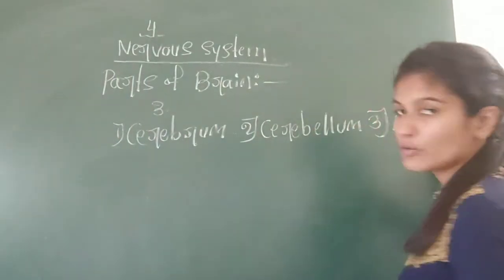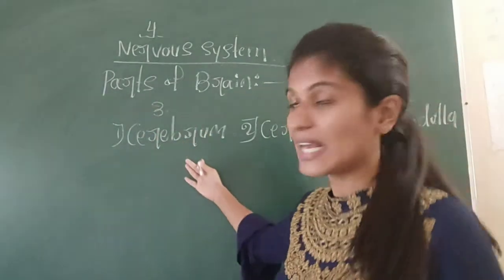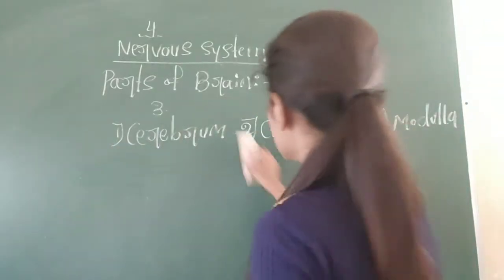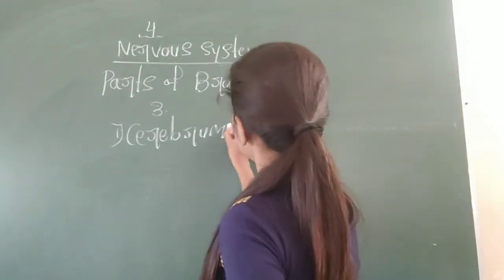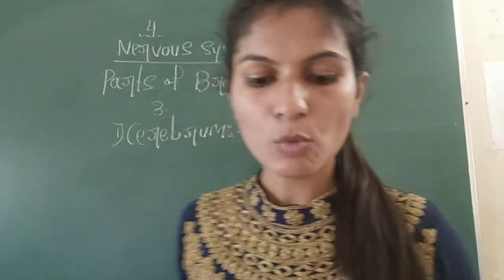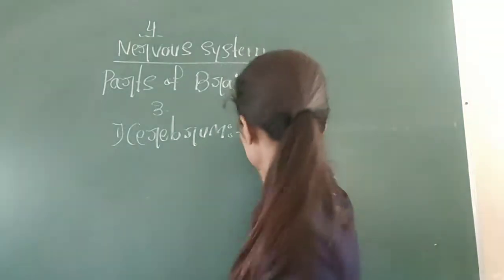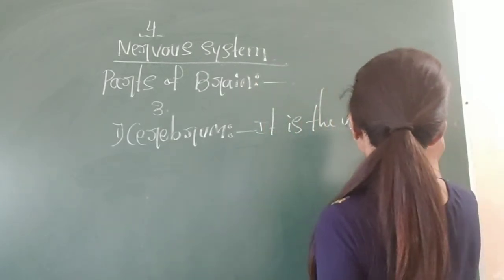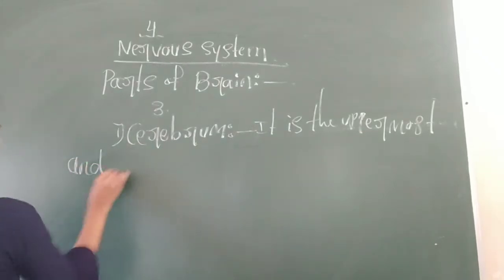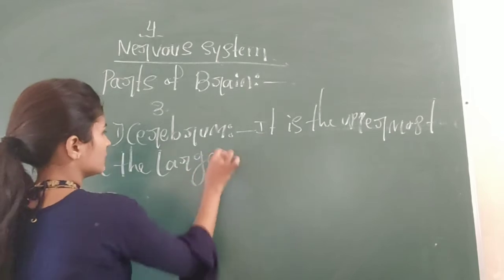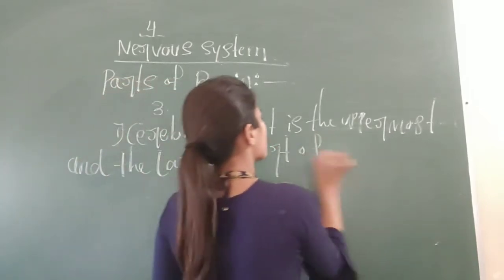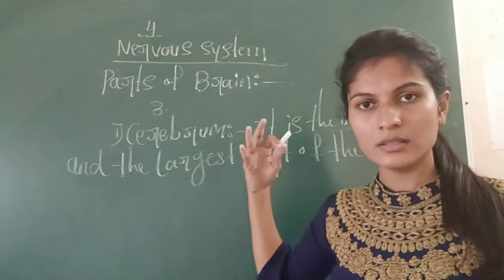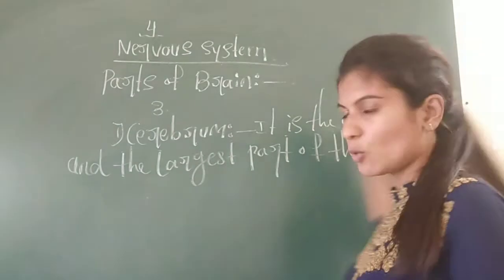Let's study each part one by one. The first one is cerebrum. What is cerebrum? It is the uppermost and the largest part of the human brain. It has a folded appearance and is composed of right and left hemispheres.